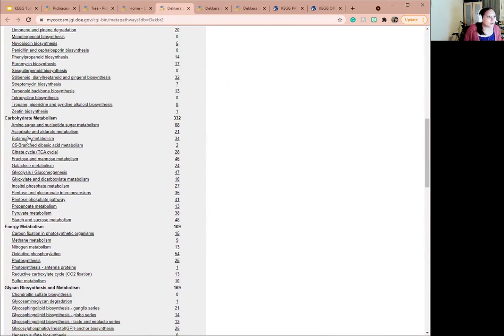And we will go to galactose metabolism. And here we see that there are, you see this number 24, it's not Kobe's number sadly. But this 24 is that tells us that there are 24 genes associated with galactose metabolism in Dekkera.